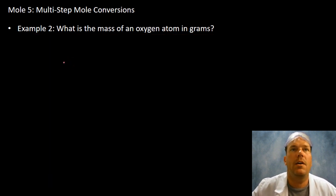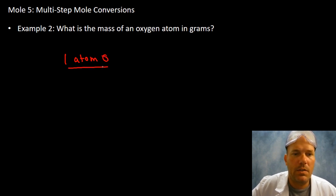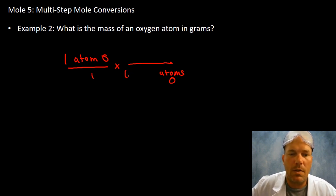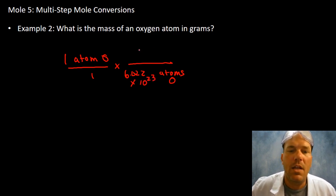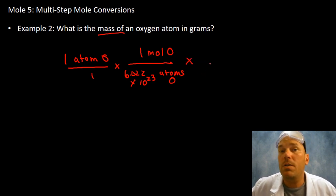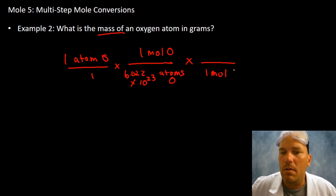Start with one atom of oxygen over one. I have atoms on top, so I need atoms of oxygen on the bottom. The connection is Avogadro's number: 6.022 × 10²³ atoms of oxygen in one mole of oxygen. I'll circle that so I don't take a wrong turn, and then: in one mole of oxygen there are 16.00 grams of oxygen.